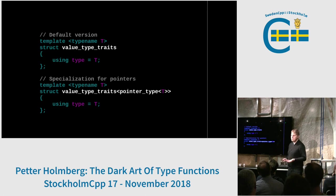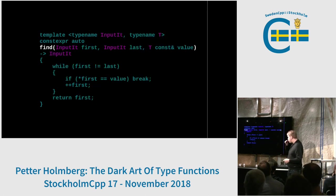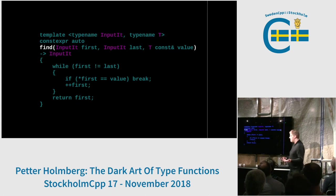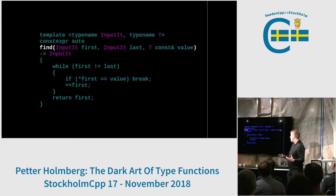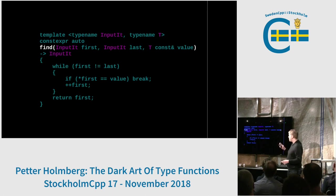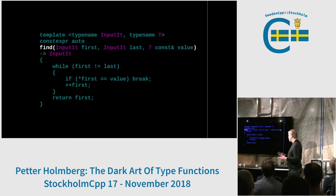But where can you use value_type? Well, let's look at find — one of the simplest algorithms in the standard library. It's just a linear search. It takes two input iterators defining a sequence, and a value we want to find in that sequence. We loop through it, dereferencing every iterator, until we find the value or we run to the end. Note that this function is a template with two template types: an input iterator type, which could be a pointer, and a type T.